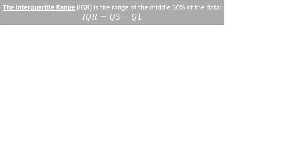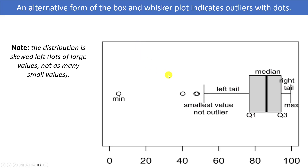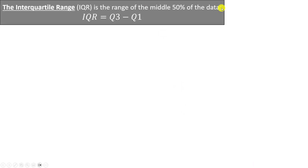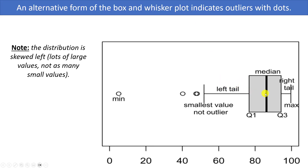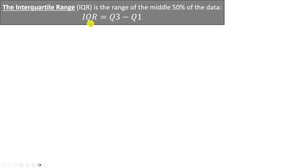The next thing to talk about is the interquartile range, often abbreviated as IQR, which is the range of the middle half — or middle 50% — of your data. You find the IQR by taking Q3 and subtracting Q1. Thinking about the box and whisker plot, the IQR is really just the length of the box, representing the middle 50% of your data. Half of the numbers in your entire data set should fall between Q1 and Q3.